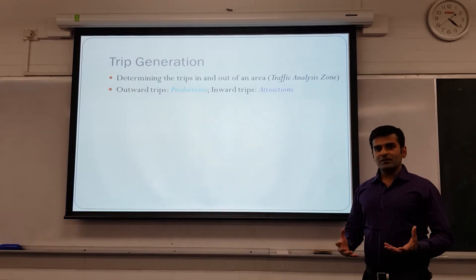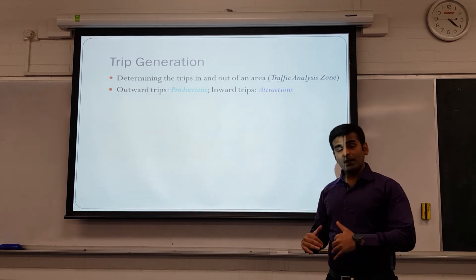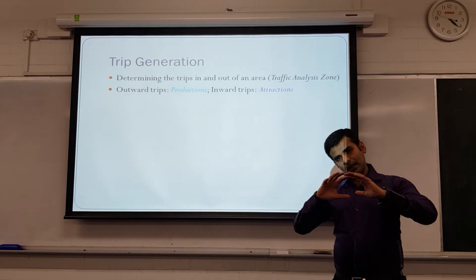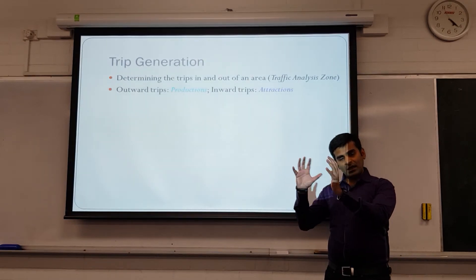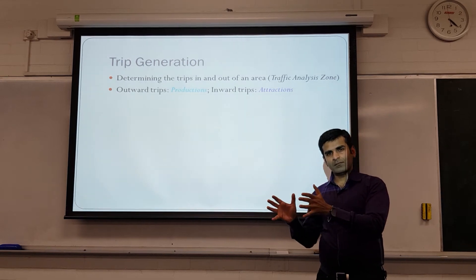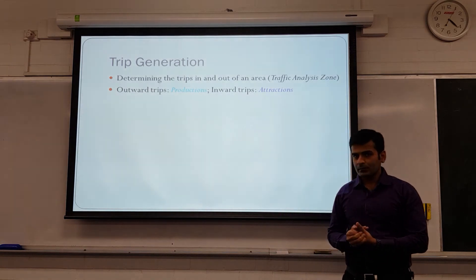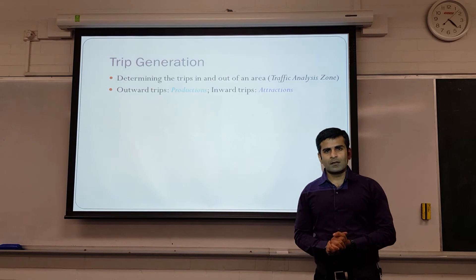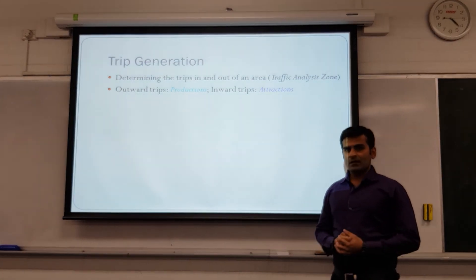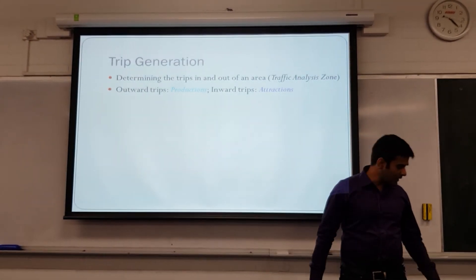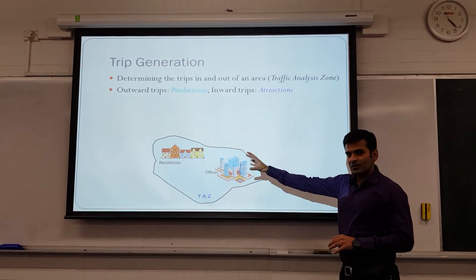Trip generation is determining how many people actually want to move out of or come into a piece of land. We call that piece of land a Traffic Analysis Zone, or TAZ — it is a piece of area in which we have people living in residences or office spaces which can bring people from other parts. For example, take a suburb in your city and consider that suburb as a traffic analysis zone.